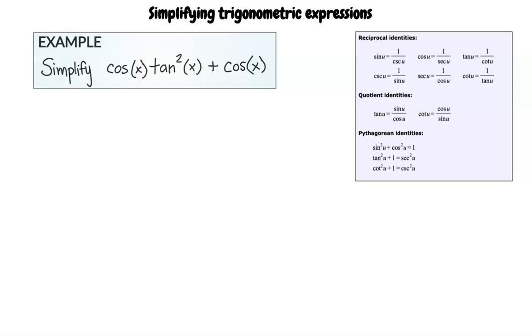Recalling the operations you used when simplifying algebraic expressions, do you know what the first step to simplifying this expression would be? This expression has two terms and both terms contain cosine of x, so I think the first step is to factor out cosine of x.